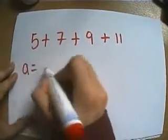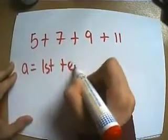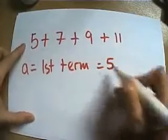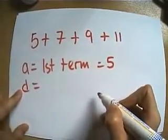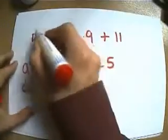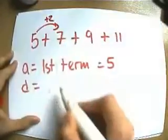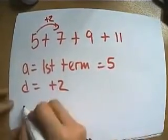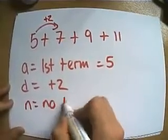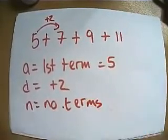And how do we define an arithmetic series? We often wanted to know three things. We wanted to know A, which was the first term, which in this particular case was 5. We wanted to know what the common difference was, which we call D. And of course, in this case, we're jumping up plus 2 every time. And then the other thing you often wanted to know was N, the number of terms in that series.